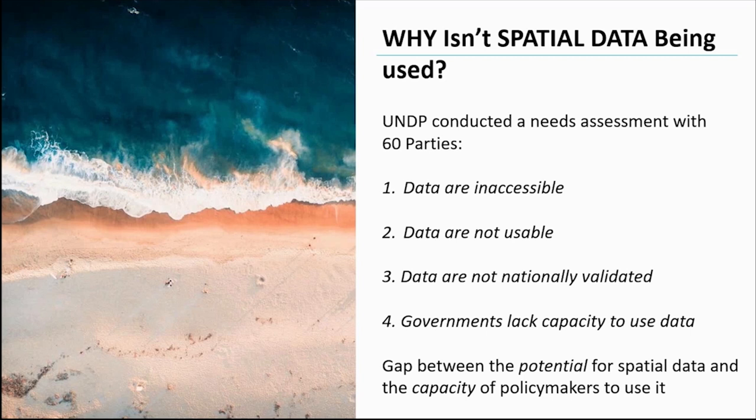We learned four really interesting things. First, spatial data are often inaccessible to national policy makers — information on nature is typically scattered among multiple ministries and requires complicated data sharing agreements to access. Second, accessible spatial data is often in unusual formats — they may be inconsistent, inaccurate, of low spatial resolution, incompatible, at the wrong time scale, or simply too out of date to be meaningful. Third, governments can't typically use data developed by experts outside their country — before a government can use a spatial dataset for decision making, it must be validated for accuracy and approved for use. And fourth, government agencies often lack the capacity and equipment to process spatial data, analyze it, and apply results in meaningful ways.